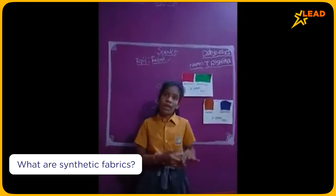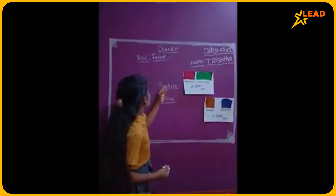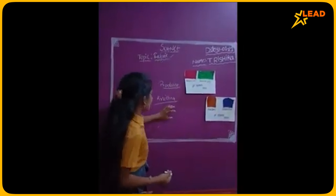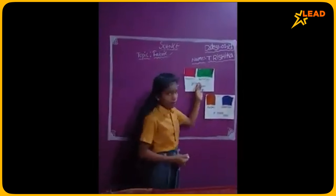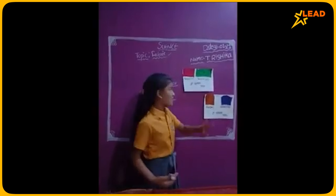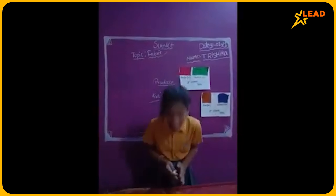Polyester is also made by humans, that is the reason it is also an example of synthetic fabric. Now I have taught you the procedure of fabric and knitting, and also gave two to three examples of synthetic fabric and natural fabric. So here is my presentation. Thank you!